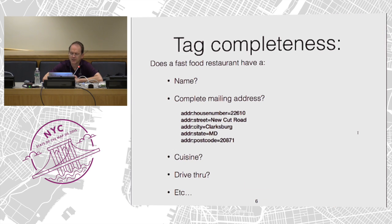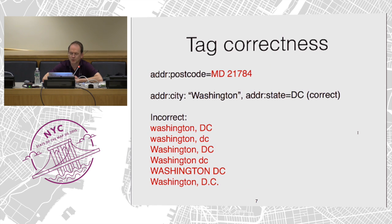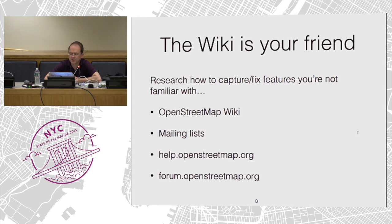Tagging completeness: for a fast food restaurant, does it have a name, the complete mailing address, cuisine, drive-through, etc.? What are the attributes that you're interested in? Then there's tag correctness, and this is a hard one for some people. Everything in red on this slide is an incorrect value. I found someone put MD as part of the postal code. And I found multiple variations of how to not spell Washington DC as a city. The wiki is your friend — you can use it to research how to capture and fix features you're not familiar with. There's also mailing lists, the help, and forum.